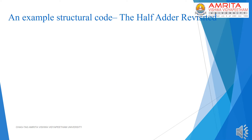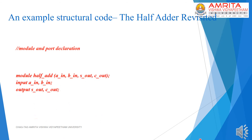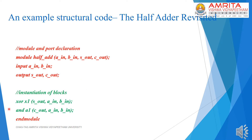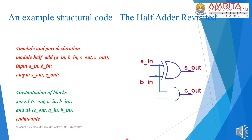In this example, a half adder is realized using XOR and AND gate primitives. This code was introduced in the first lecture; we are just reproducing it here. We are using primitives which are predefined in Verilog, so we are simply instantiating these primitives to create a structural code for the half adder. From the HDL description, it is difficult to infer any idea related to the behavior of the module, and the design effort is very high since we need to know all the gate-level building blocks and how they are interconnected.